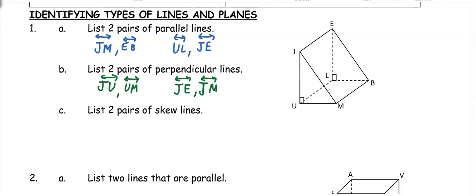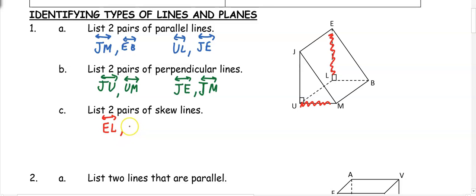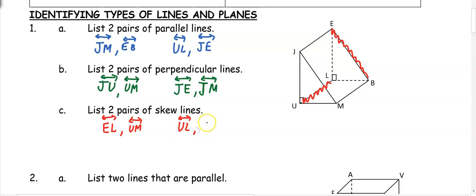Skew lines are two lines that go in opposite directions. An example would be UM and EL — they're on different parts of the shape, going in different directions, so they'll never intersect and they're not perpendicular. Another example is EB and UL — going in different directions, they'll never be able to touch or intersect because they're on different parts of our 3D figure.